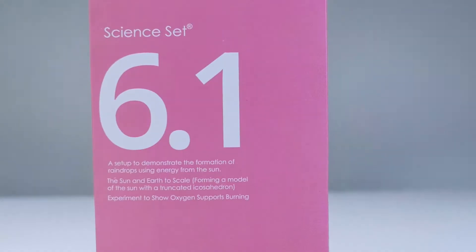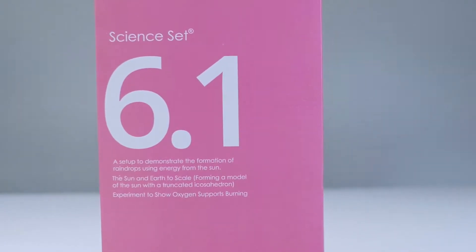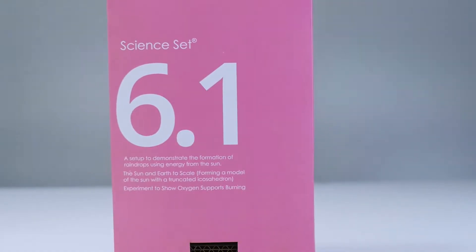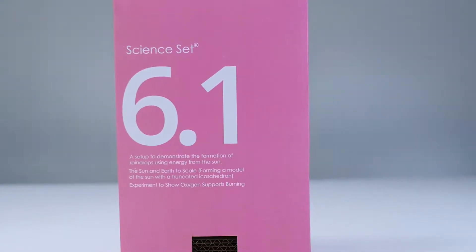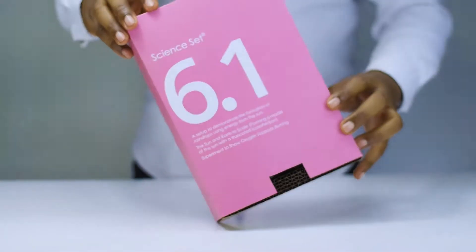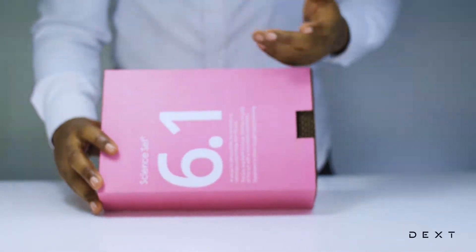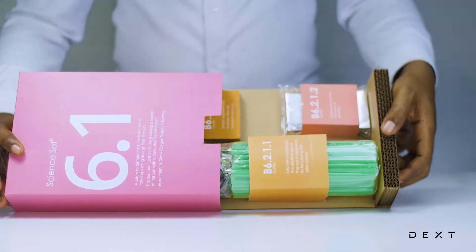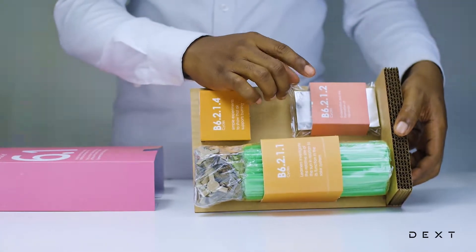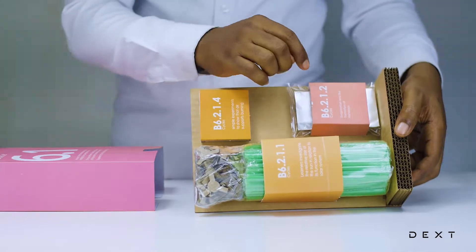This is a tutorial for DexSignSet 6.1. Hi, in this video, we are going to build a model to demonstrate the formation of raindrops. The compartment we are going to get the materials from is B6.2.1.2.1.